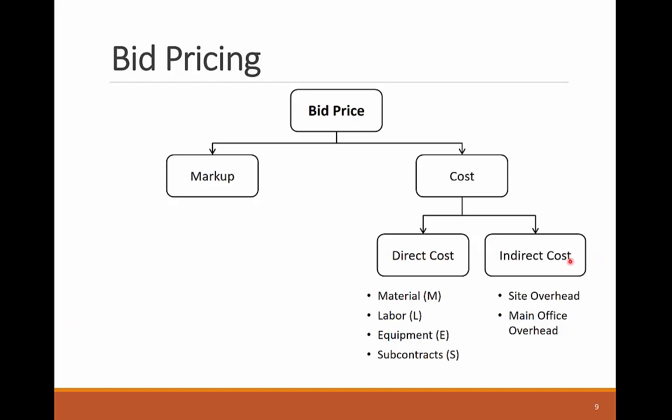The indirect cost is any cost that cannot be directly associated to a work package in your project, and it includes site and office overhead items. Site overhead includes general site conditions and supervision, like project managers, project engineers, and superintendents, as well as temporary facilities like office trailers, dumpsters, and mobile toilets. Office overhead includes all the staff and facility costs of the main office, where functions like business leadership, administration, estimating, human resource management, and marketing are performed to support the company's different projects.